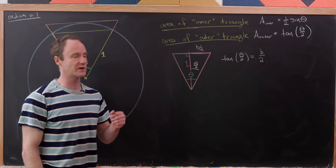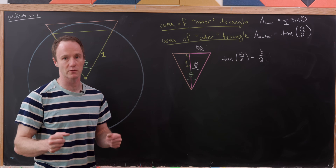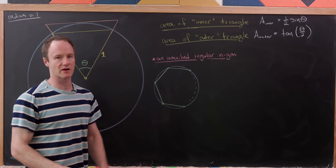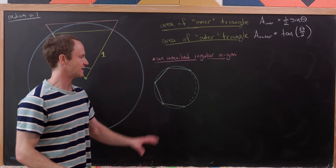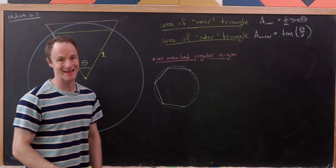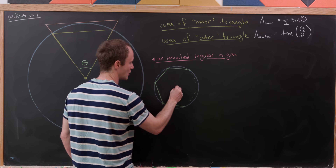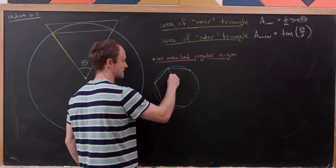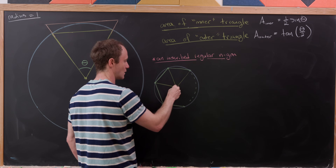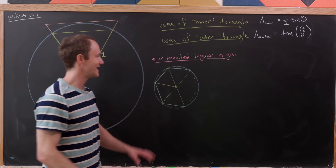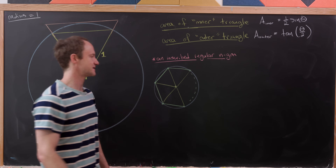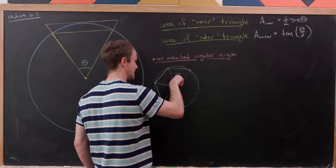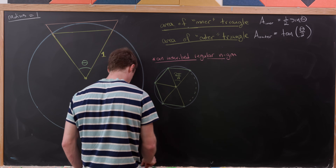Now we've got both formulas for the inner and outer triangles, and we're ready to generate our approximations of pi. Let's find the area of the inscribed regular n-gon. We go to the center and place a radius from the center to each vertex, cutting the n-gon into n pieces. The angle around the whole circle is 2π, so each piece has angle 2π over n.